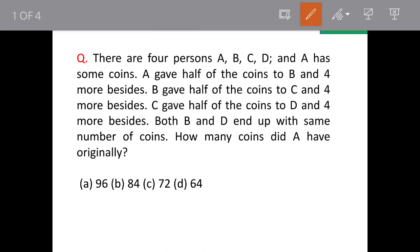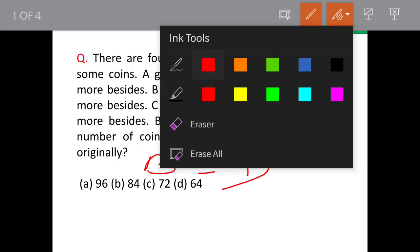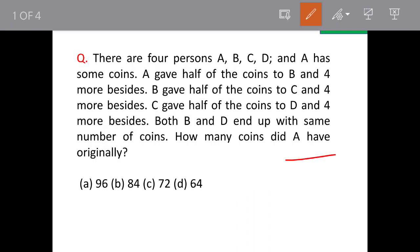Now in similar manner, B gives half of the coins to C and 4 more. And then C will give in similar manner half of the coins to D and 4 more. And in the end, B and D will have same number of coins. So how many coins A had initially? This is a question we have to answer. And we have got 4 answer options given here.